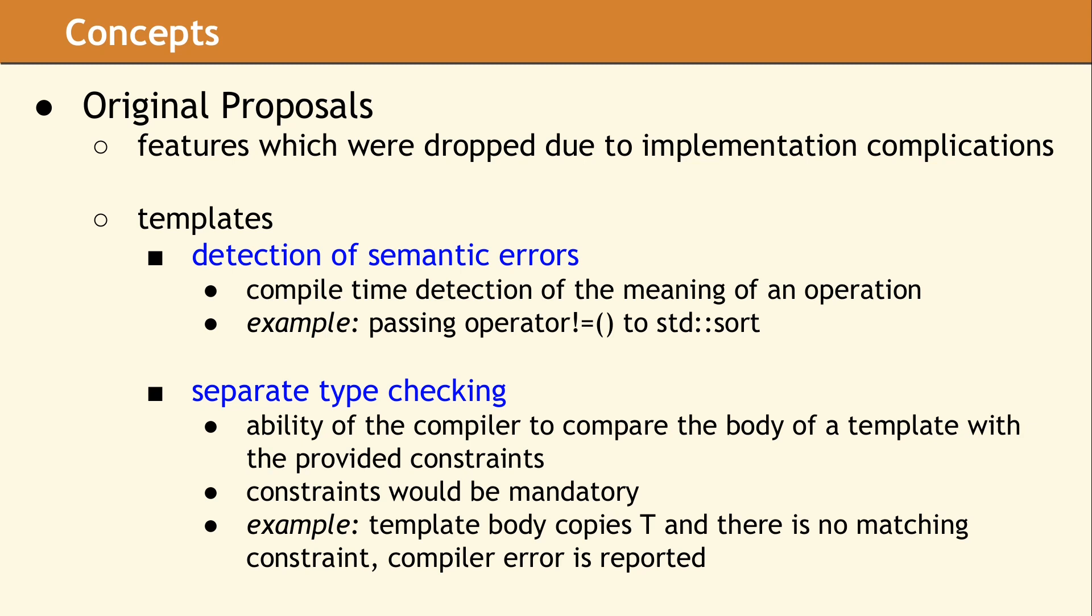The other component which is not present is called separate type checking. This is defined as the ability of the compiler to check if the constraints are correct based on the body of the template. If the body uses an operation not guaranteed by some constraint, then a compiler error occurs. For example, if you wrote a template function which copies an object of type T and you did not specify the constraint that T must be copyable, the template would be reported as incorrect. This would have been a stunning and very powerful feature. Then again, having multiple missing constraint errors in every single template turned out to be a bit overwhelming and tedious to resolve.